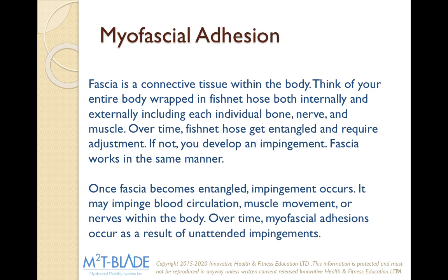Fascia is a connective tissue within the body. Think of your entire body wrapped in fishnet hose, both internally and externally, including each individual bone, nerve, and muscle. Over time, that fishnet hose gets entangled and requires adjustments. If not, you'll develop an impingement. Once fascia becomes entangled, impingement occurs — it may impinge blood circulation, muscle movement, or nerves. Over time, myofascial adhesions occur as a result of unintended impingements. Those clients that always come in and never have issues but don't move very well — that's what we call repetitive strain injuries. Also, clients that say 'I always do this sport and I always get injured' — most of the time they have a myofascial adhesion in that area causing that injury. We need to clear up that myofascial adhesion to get our clients moving better and stop that pain cycle.